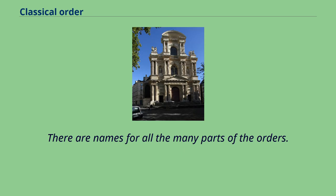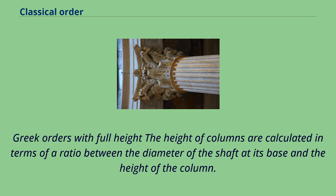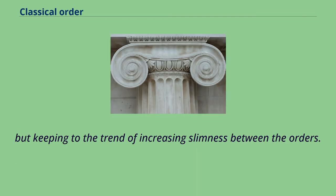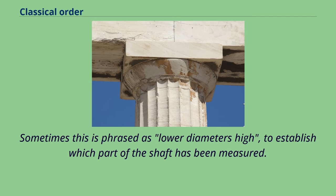There are names for all the many parts of the orders. The height of columns is calculated in terms of a ratio between the diameter of the shaft at its base and the height of the column. A Doric column can be described as 7 diameters high, an Ionic column as 8 diameters high, and a Corinthian column 9 diameters high, although the actual ratios used vary considerably in both ancient and revived examples, keeping to the trend of increasing slimness between the orders. Sometimes this is phrased as lower diameters high, to establish which part of the shaft has been measured.